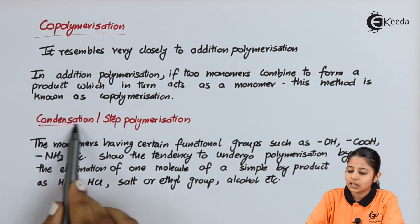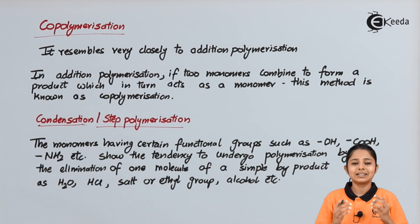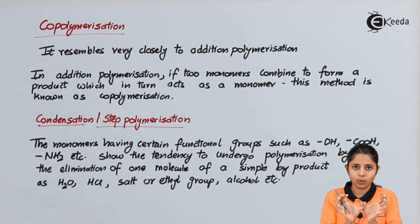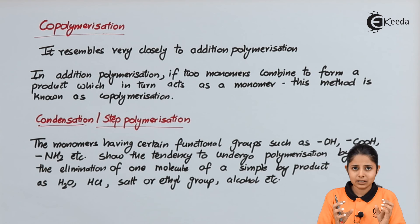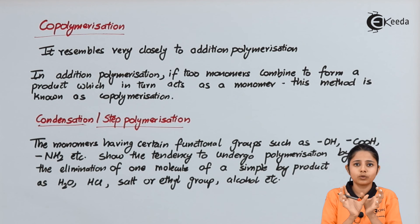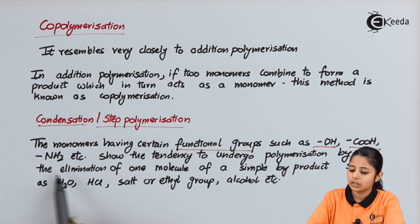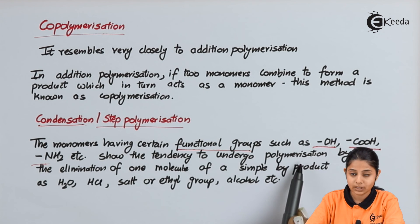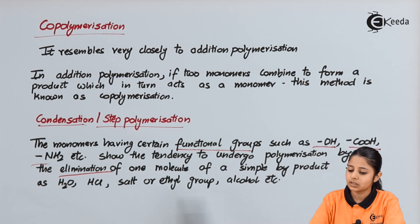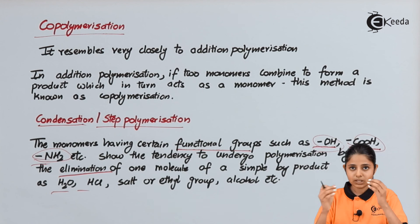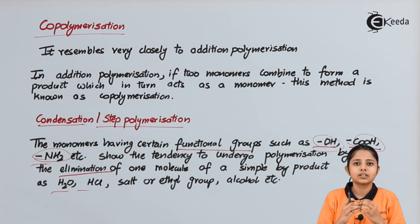The third process is condensation or step polymerization. If two monomers need to link together to form a polymer, but certain atoms at their ends are blocking the linkage, we remove those atoms as a by-product and then the monomers combine. Monomers having functional groups such as –OH, –COOH, –NH2, etc. undergo polymerization by the elimination of a simple molecule such as H2O, HCl, or a salt. After eliminating these functional groups, the linkage between monomers takes place and forms polymers.